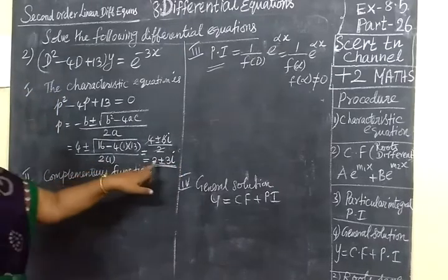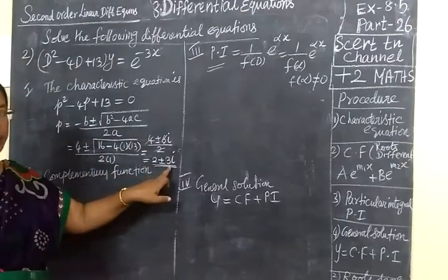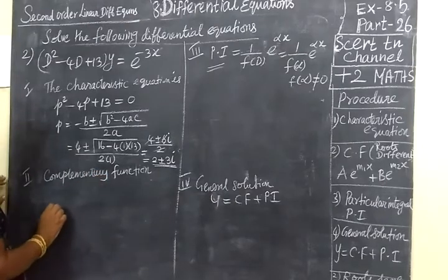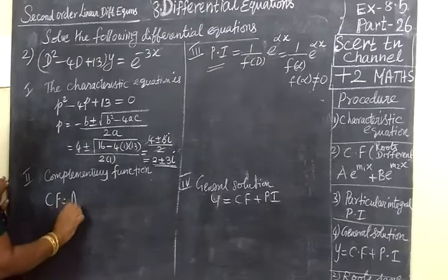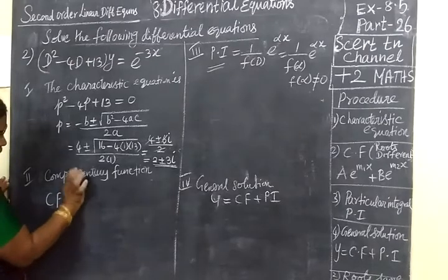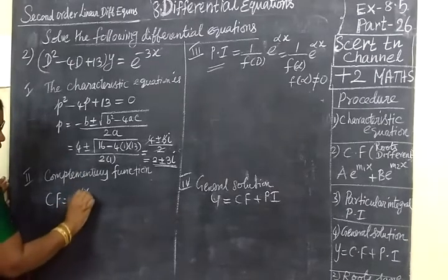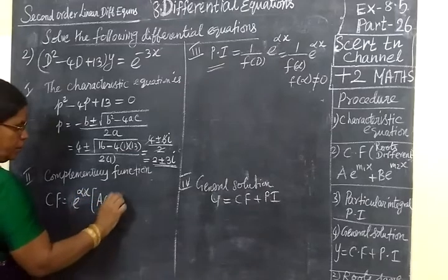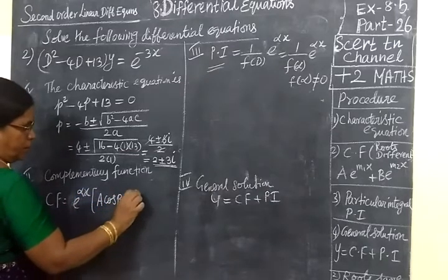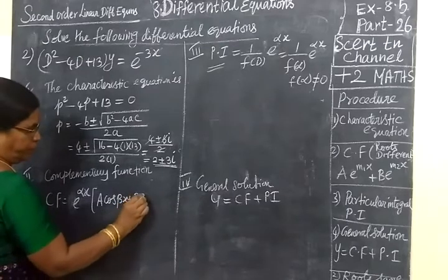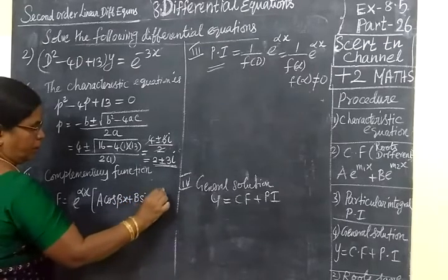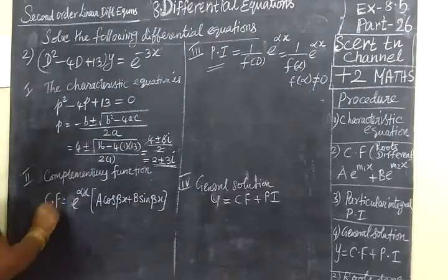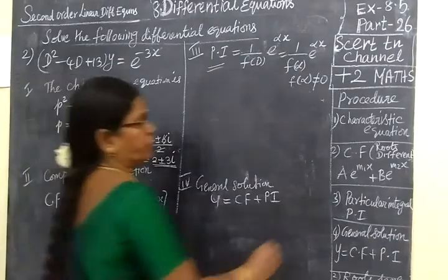Complex number occurs here, 2 plus or minus 3i in complex number. Complementary function, CF equal to e power alpha x bracket a cos beta x plus b sin beta x.